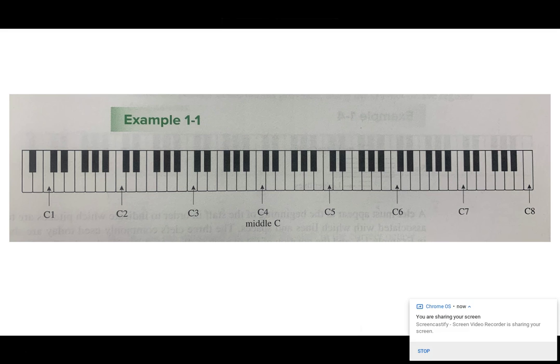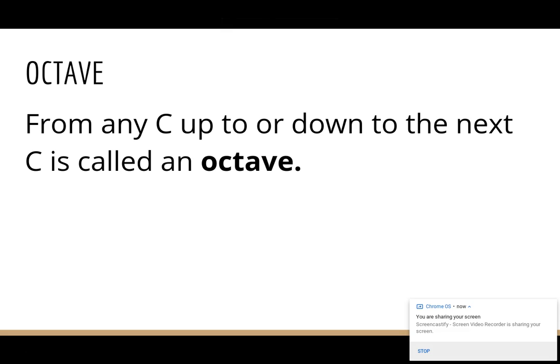So if I just say, go to the keyboard and play a C, you can play any C, but we have these designations so that if I say C2, we would always hear the same note. If I said C7, we'd always hear the same note, it would be much higher than C2.